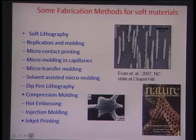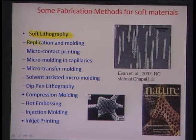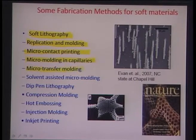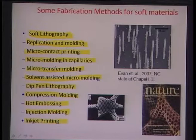Fabrication of polymer micro devices started with the Whitesides group in the early 1990s, also known as soft lithography. Several processes have come from this basic replication and molding technique, including micro contact printing, micro molding in capillaries, micro transfer molding, solvent-assisted micro molding, dip-pen lithography, compression molding (hot embossing and injection molding), nano imprint lithography, and inkjet printing.